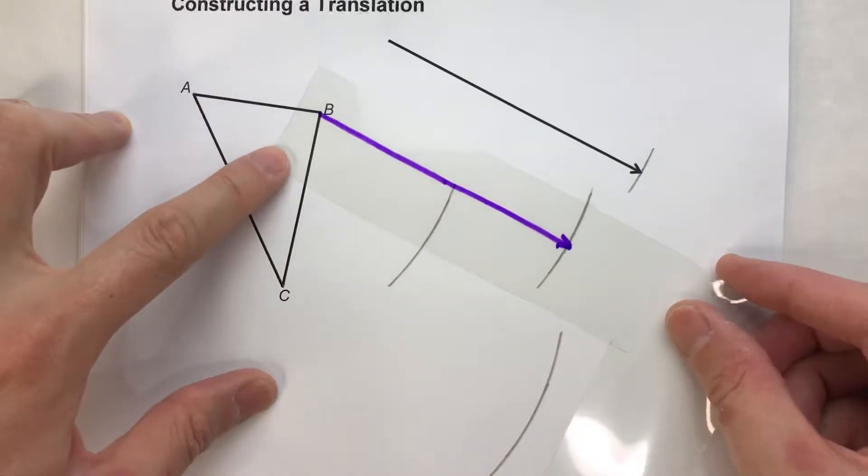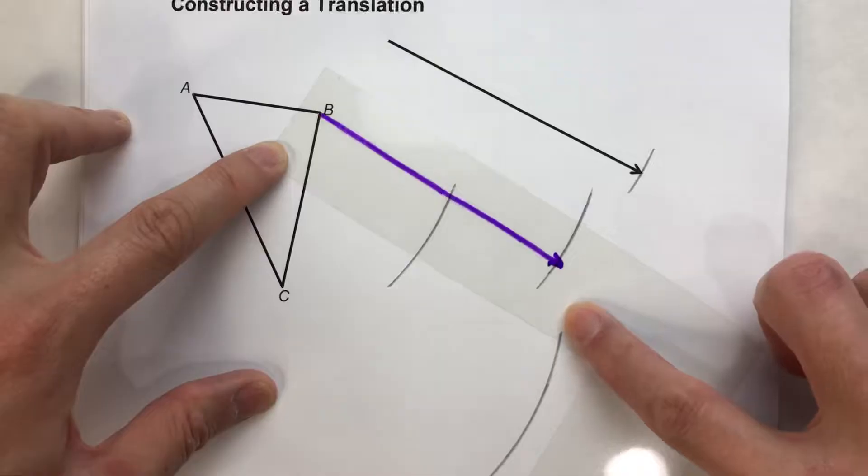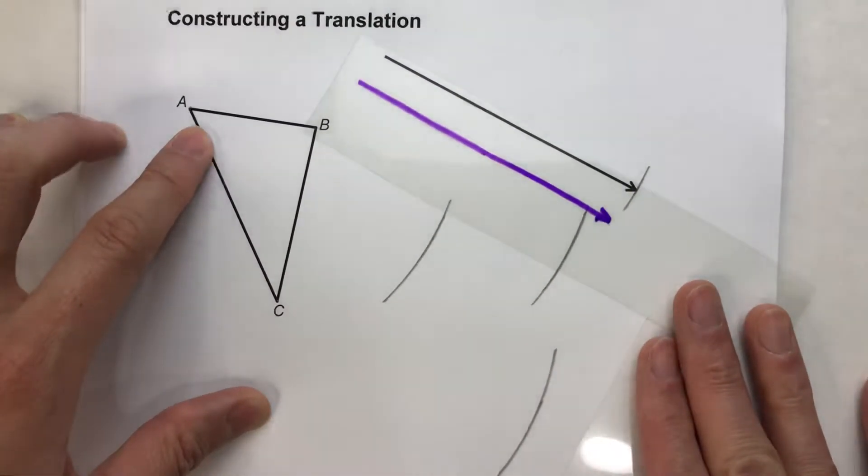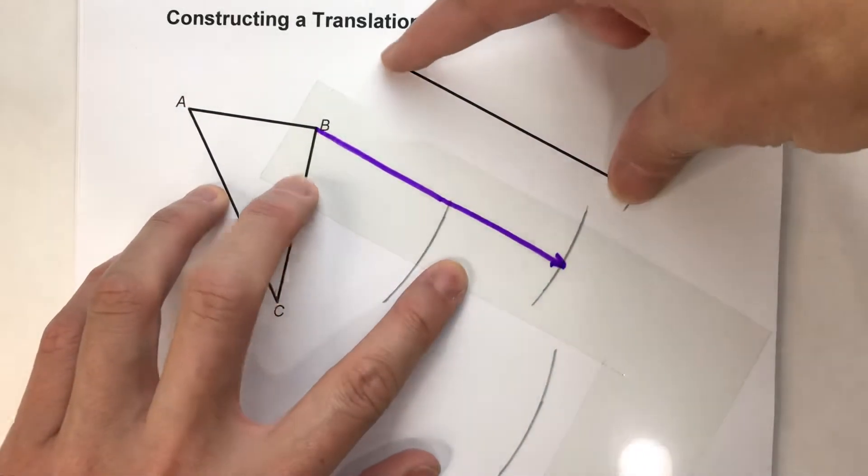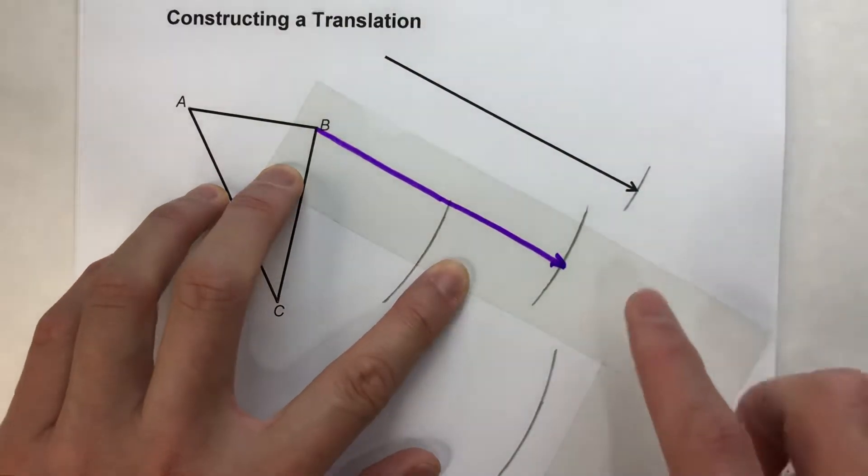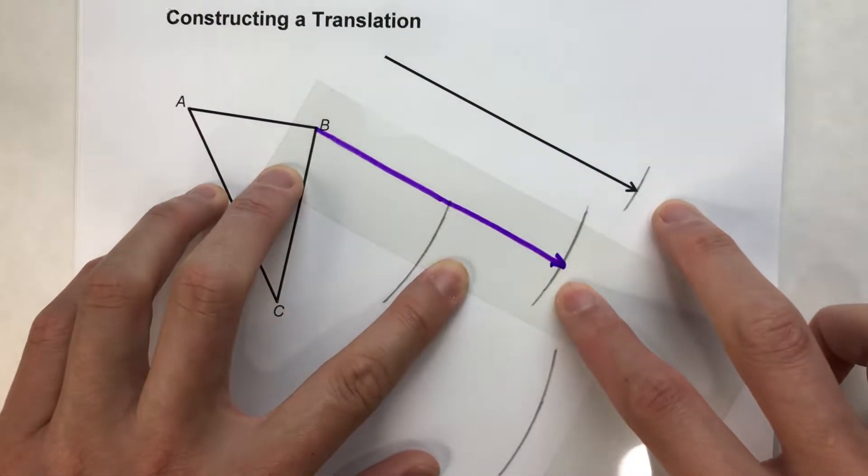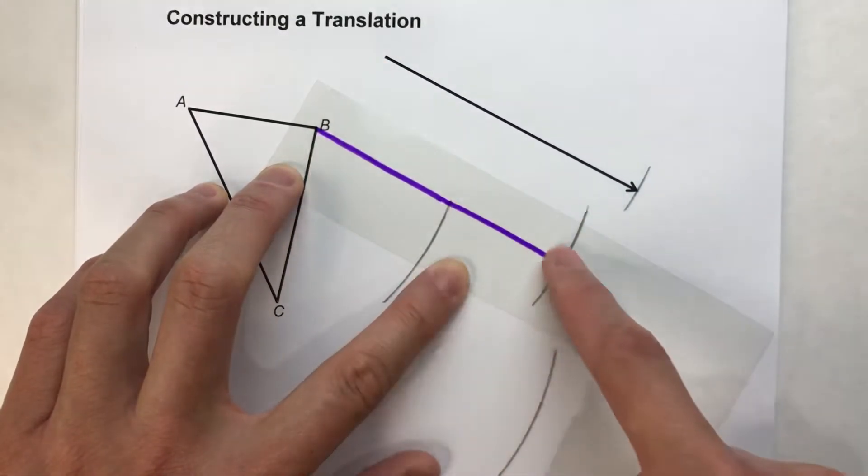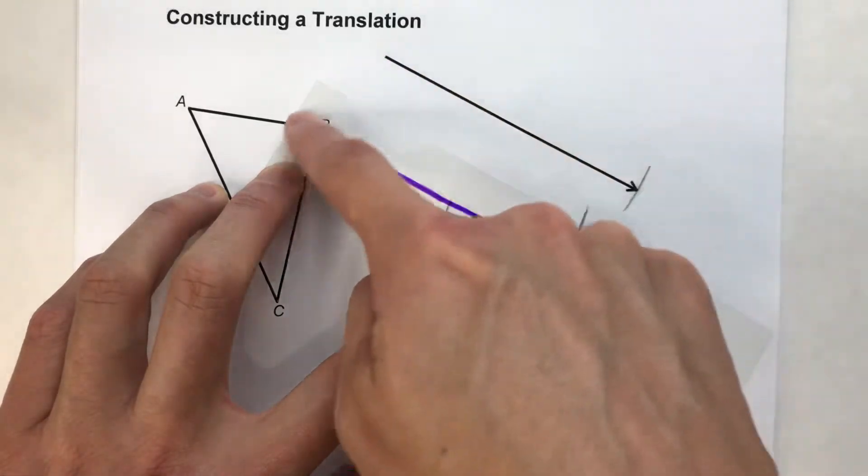Now the question becomes, where exactly will B prime be along this arc? It's somewhere here. Now, in order to figure out exactly where B prime ends up on this arc, you have to imagine that we took this vector and we duplicated it here. Notice, the vectors are going to be parallel because they're in the same direction. So what we basically need to do is construct a parallelogram here.